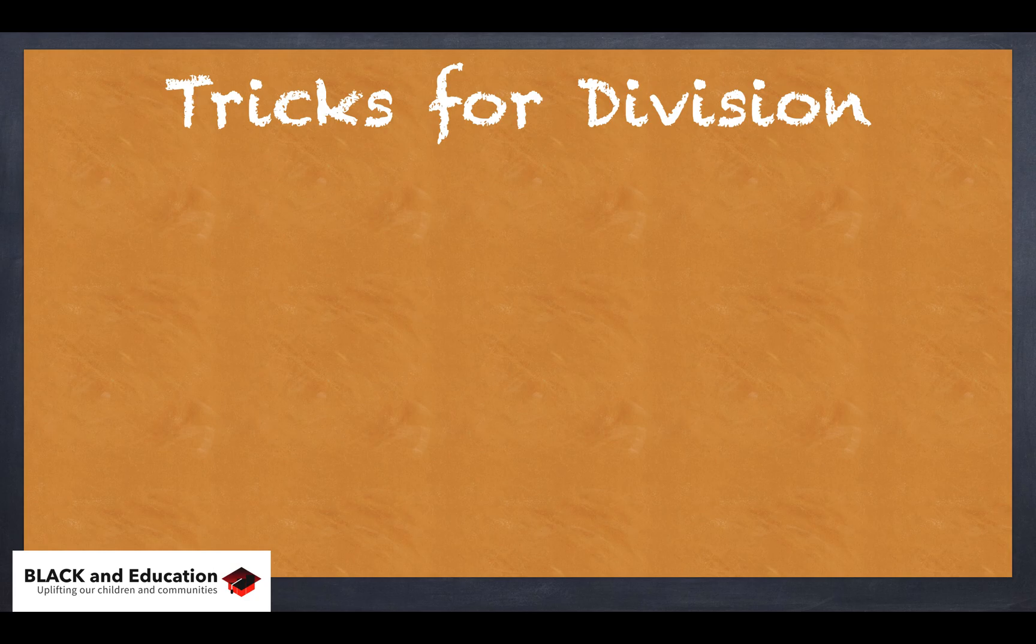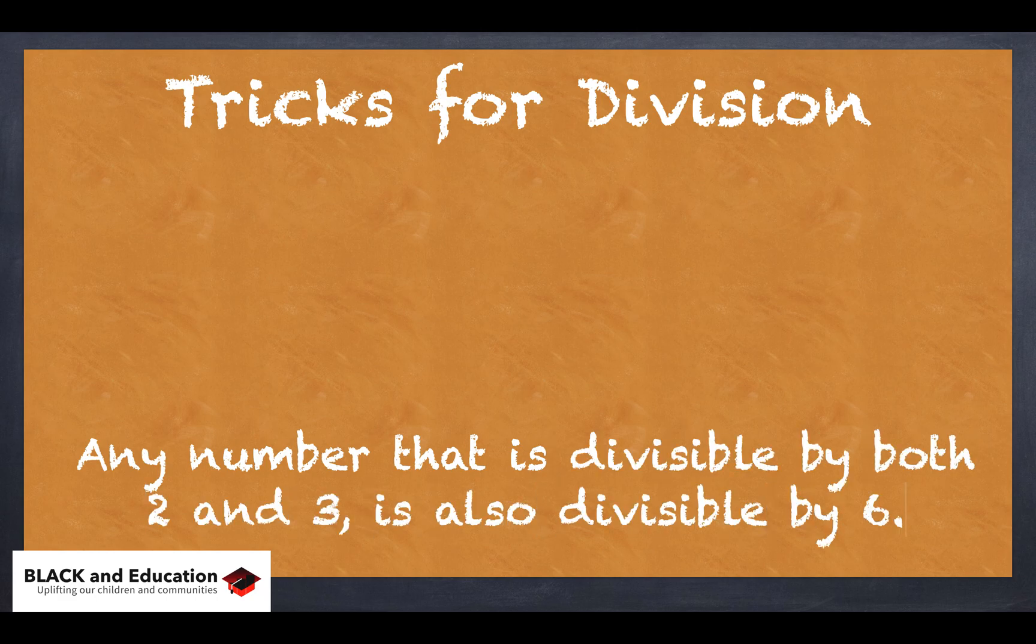Let's look at the divisibility rule for 6. The rule for 6 is that any number that is divisible by both 2 and 3 is also divisible by 6.